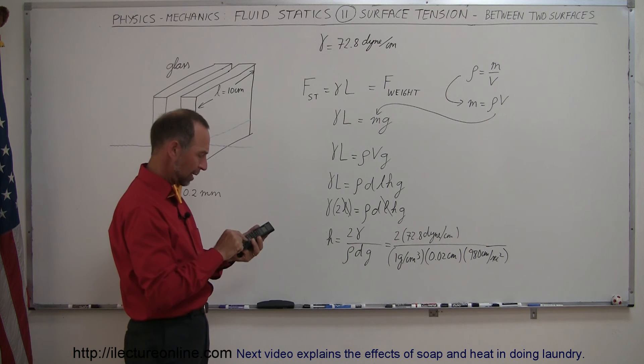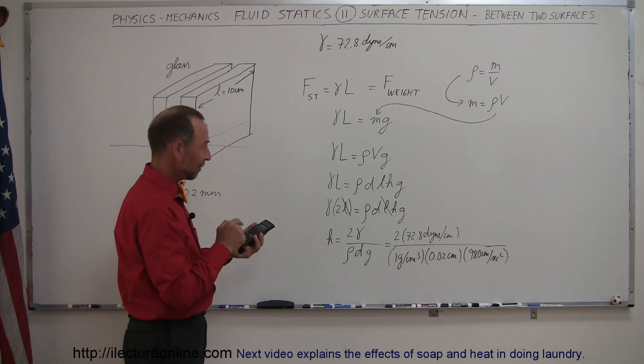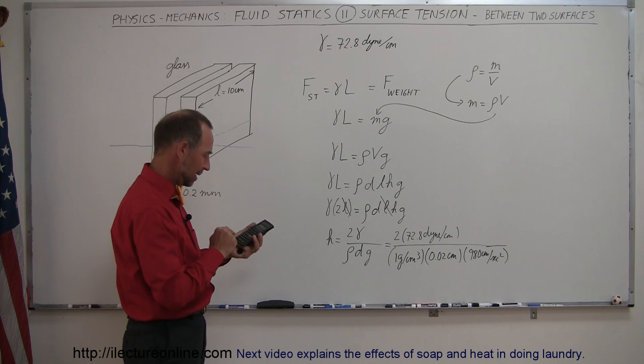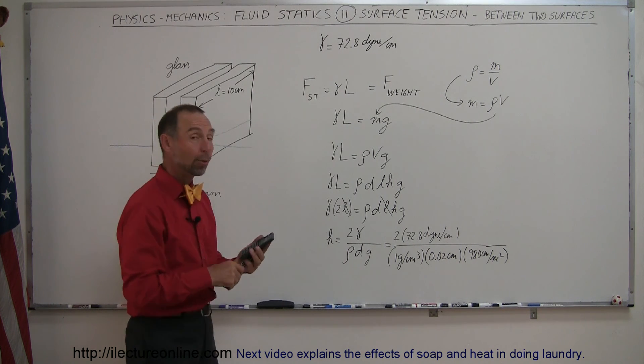So we have 2 times 72.8 divided by 1, divided by 0.02, and divided by 980, and I get 7.4 centimeters.